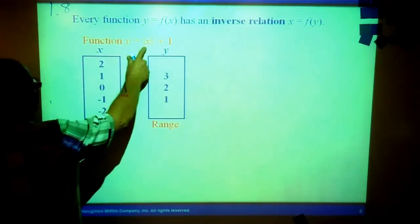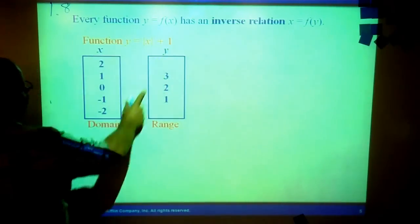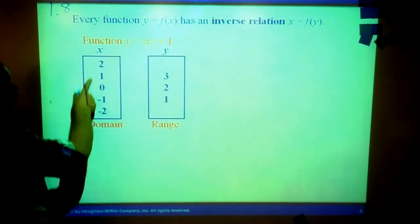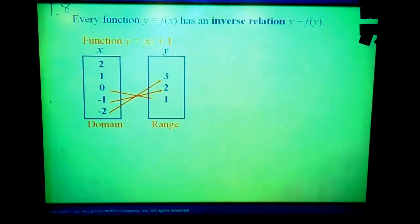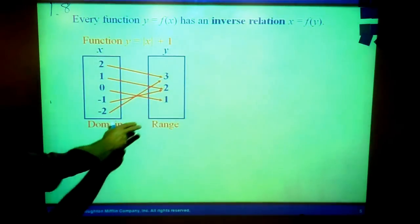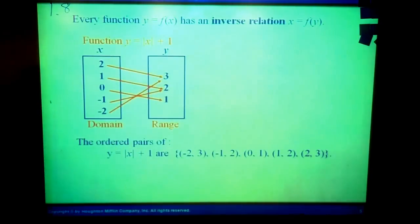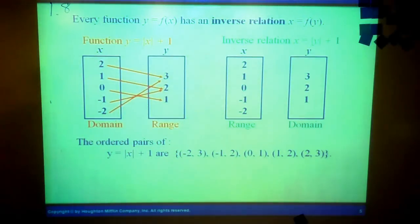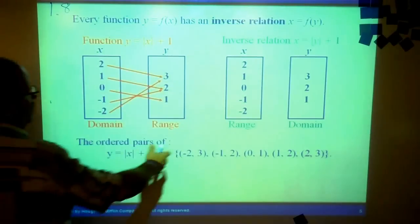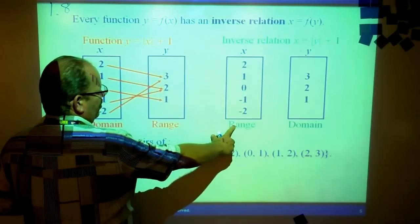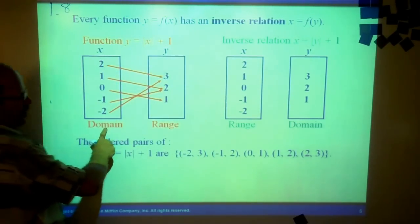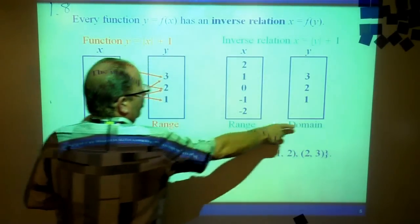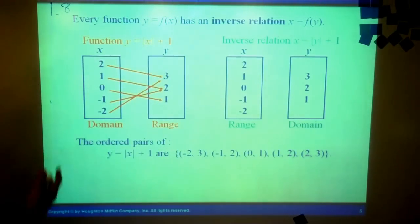For example, if we have y equals the absolute value of x plus 1, we would have this domain and this would be our possible range. The inverse of that would be if we switched the domain and the range. So now this becomes the range where it was the domain. This becomes the domain where it was the range. That's called the inverse.